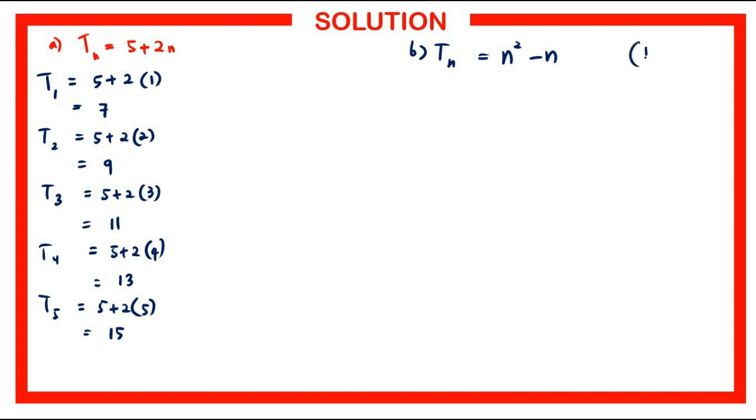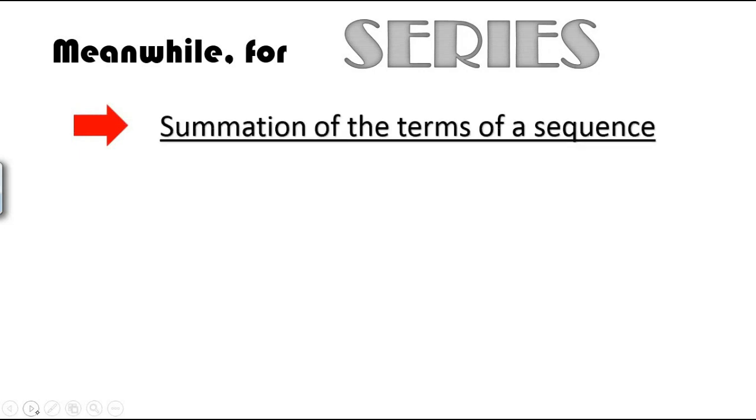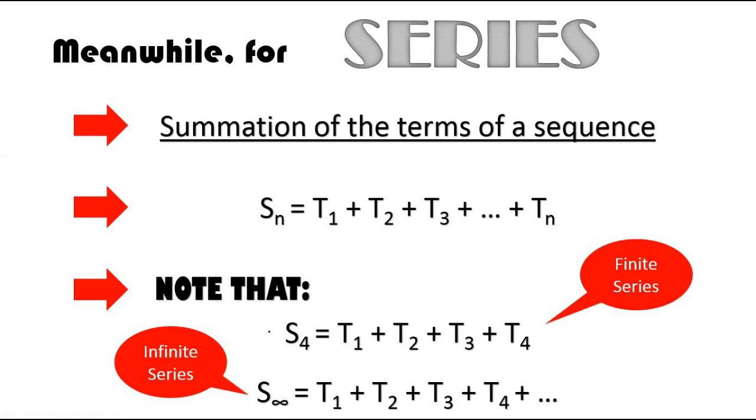For series, we have agreed before that it's actually the summation of the terms of a sequence. We can conclude that our Sn is the summation of T1 plus T2 plus T3 up till Tn. Note that if you want S4, the summation of the first four terms, it's a finite series.